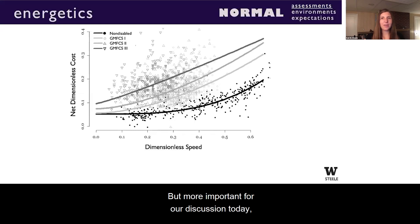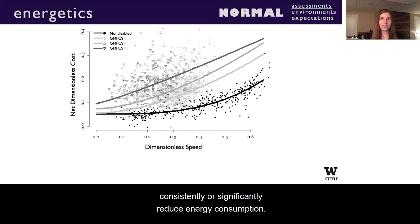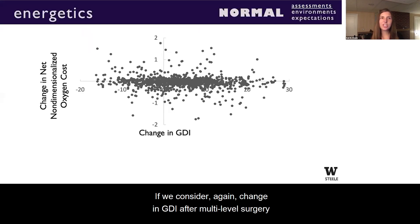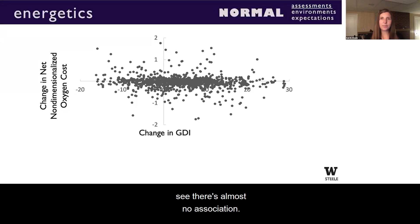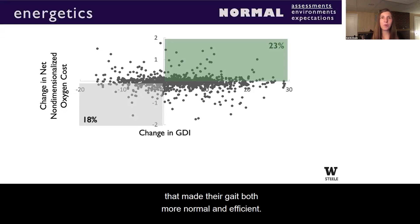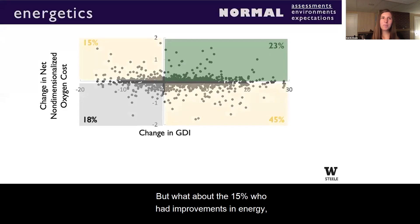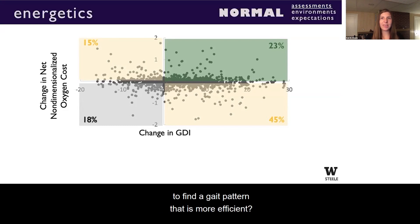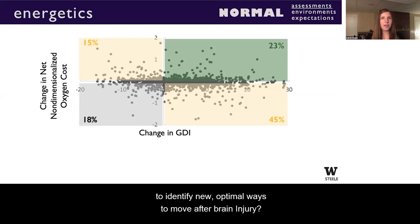But more important for our discussion today, we fundamentally do not understand why energy consumption is so high, and none of our current treatments consistently or significantly reduce it. If we consider change in GDI after multi-level surgery and compare it to change in energy, we see there is almost no association. The 23% who had improvements in both energy and GDI are easier to understand — they likely had improvements in biomechanics and control. But what about the 15% who had improvements in energy but not GDI? How are they using their unique neuromechanics to find a more efficient gait pattern? Are there opportunities hidden in these groups to identify new optimal ways to move after brain injury?